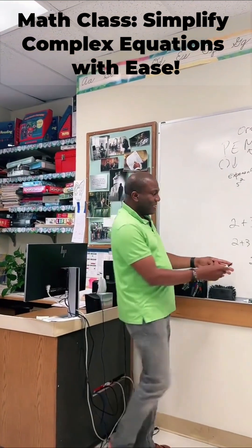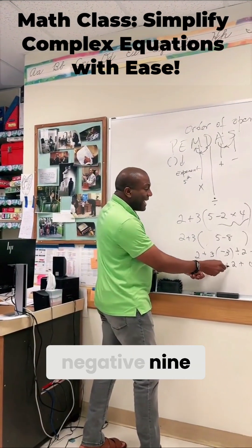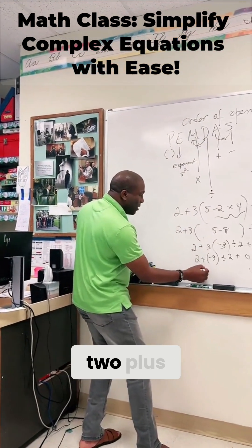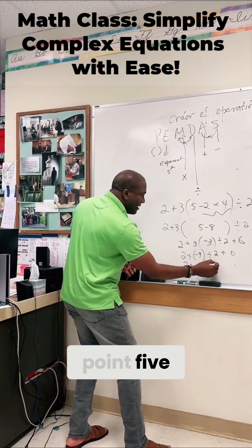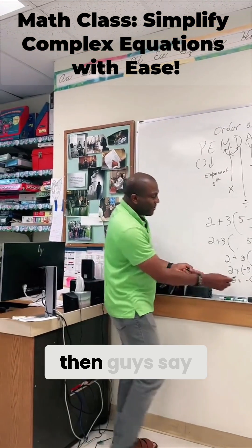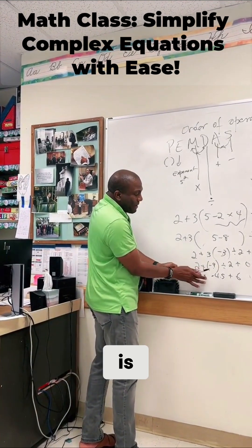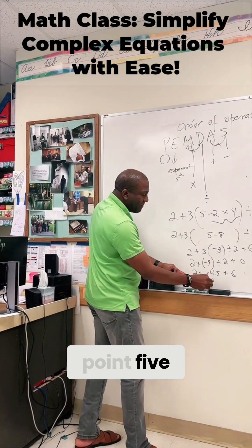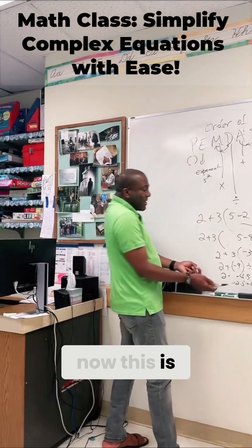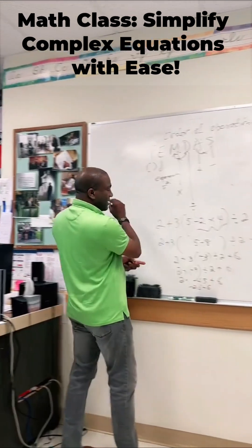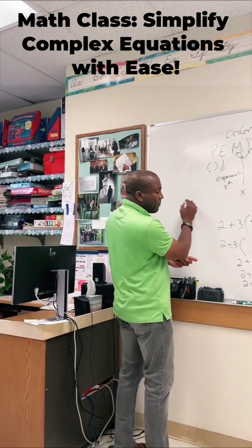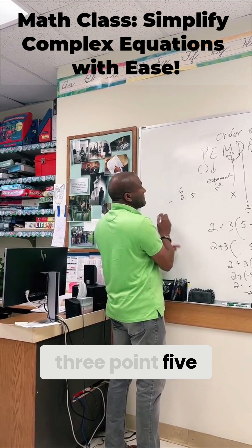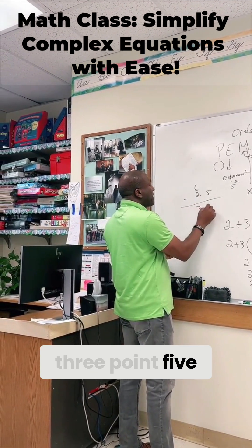Why? They do negative 9 divided by 2, negative 4.5. Okay, negative 4.5. So 2 plus negative 4.5 plus 6 — that's gonna give me negative 2.5 plus 6, and then that's gonna give me... negative 2.5 plus 6 is going to be 3.5 — positive, yeah, positive 3.5.